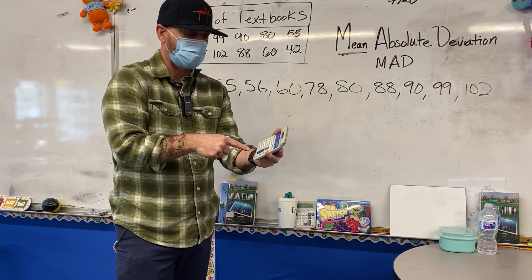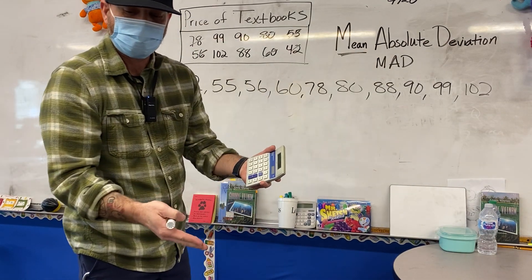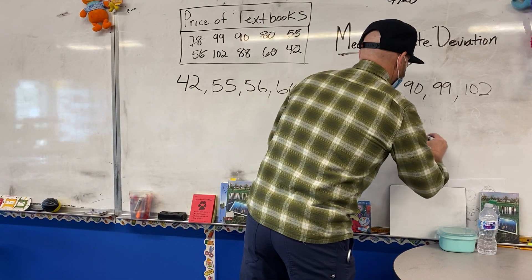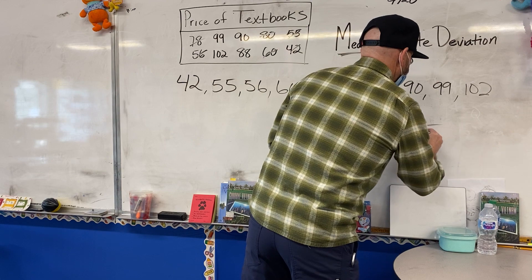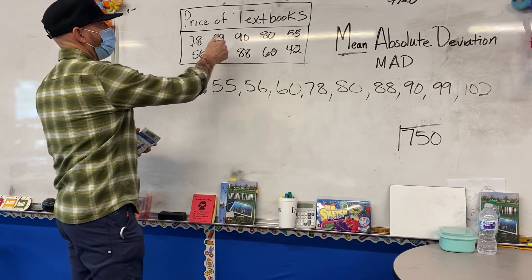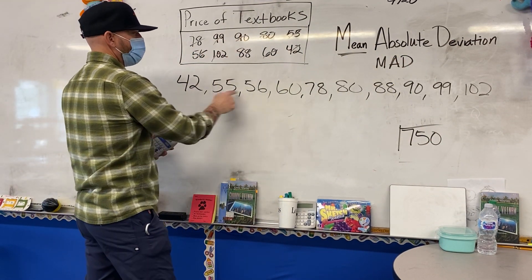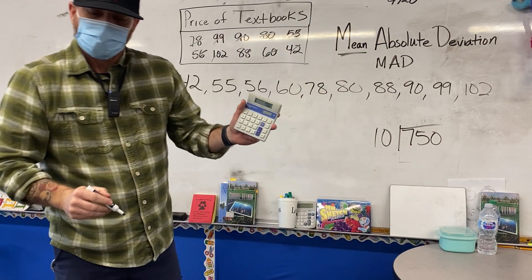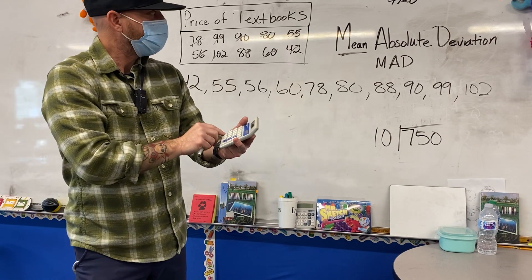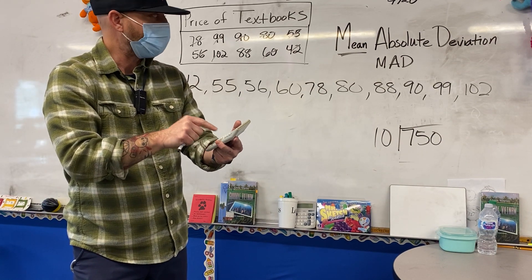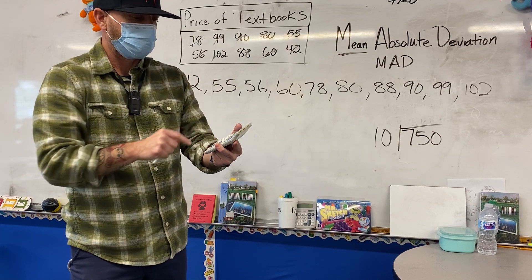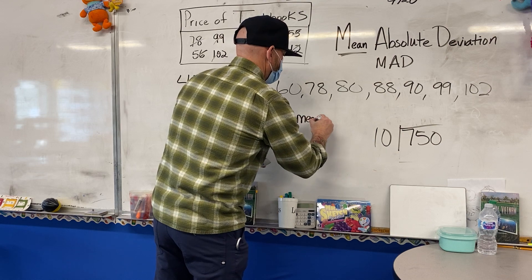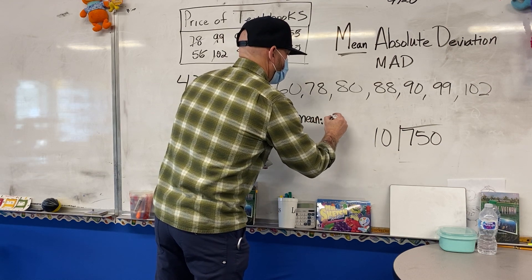I always suggest doing it twice in the calculator — I did it twice because I've already done it. So now I'm going to take that 750 and divide it by the number of data values. We count those: 1, 2, 3, 4, 5, 6, 7, 8, 9, 10. So the mean is going to be 750 divided by 10, which is 75. So the mean is 75.